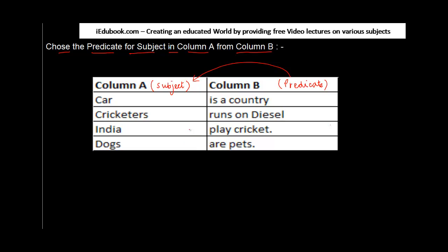So you have to match what is given in column A, which is the subject, with the predicate in column B. First, 'car' — car is a country, obviously no. Car runs on diesel — yes, this is correct. So we mark car with 'runs on diesel.' Second, cricketers — cricketers is a country, incorrect. Cricketers play cricket — this is correct.